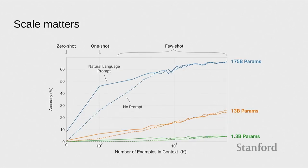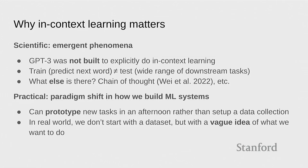And the scale matters here. From the original GPT-3 paper, if you were playing around with small 1-billion-parameter models, you could see that nothing was really working at all. It's only when you get up to 175 billion parameters that you could get in-context learning. This is simply mind-blowing. And ever since, I've been obsessed with figuring out why this works. This is not the way machine learning is supposed to work. Hopefully we can try to understand a little bit of this — and why in-context learning matters, not just out of random curiosity.